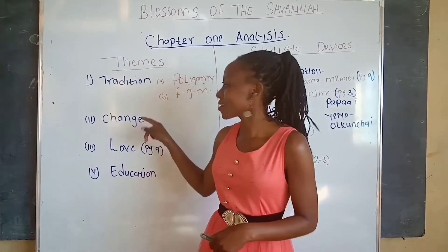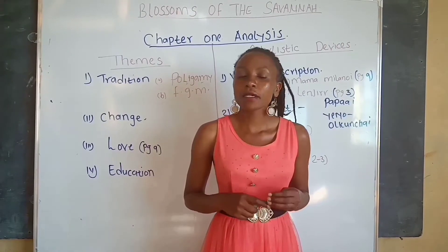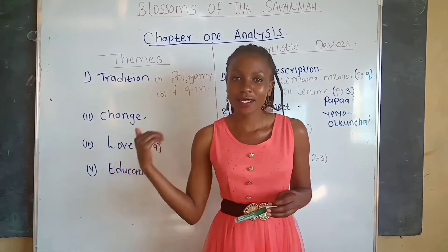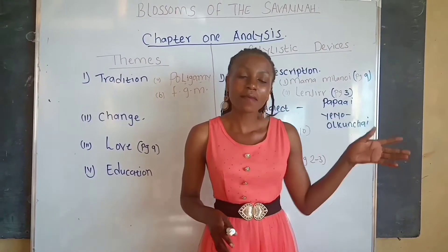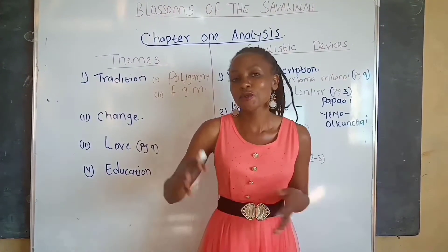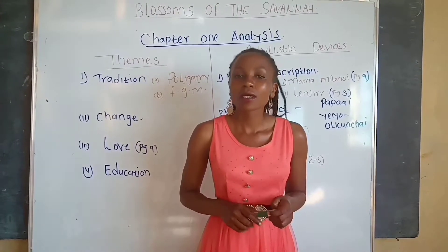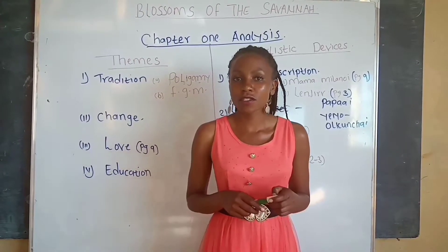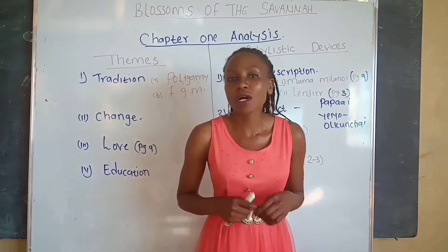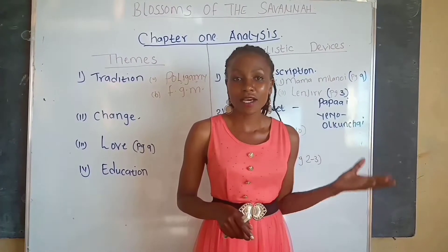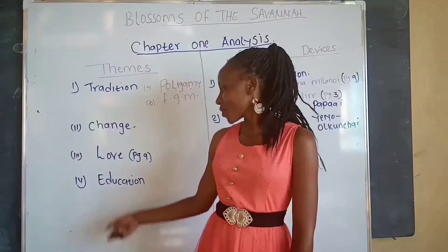Theme number two is the theme of change. The book opens with the family moving from Nakuru town to Nasila — a change from an urban setting to a rural setting. We also have cultural change; the culture is changing. For instance, the two girls are supposed to have undergone the cut, but at that age they have not.